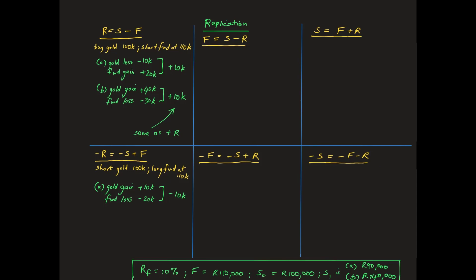The forward loses because it is a long and the expiration spot price is R20,000 lower than the forward price. Once again, replication is demonstrated because the combined outcome is negative R10,000, which is exactly the same as borrowing R100,000 for one year at the risk-free rate of 10%. Case B shows that the outcome is exactly the same if gold increases its price instead to R140,000.